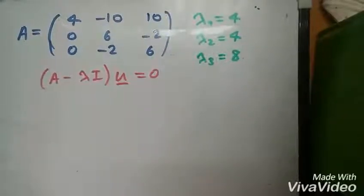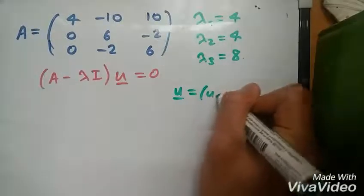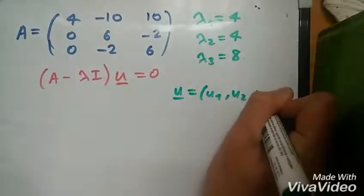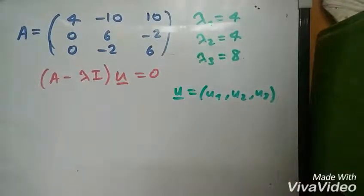Where U, because it's a 3x3 matrix, equals U1, U2, and U3 - the eigenvectors associated to each eigenvalue.